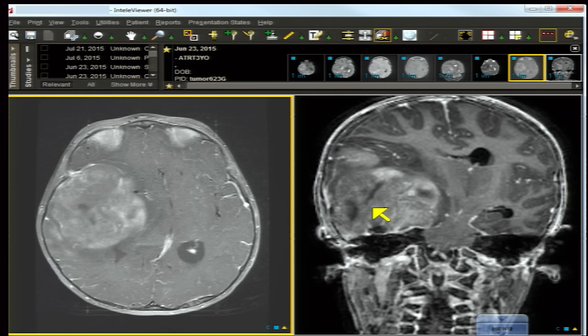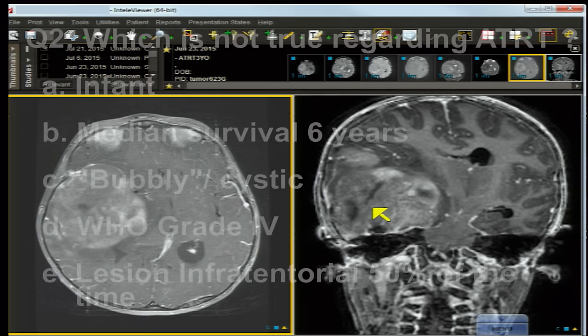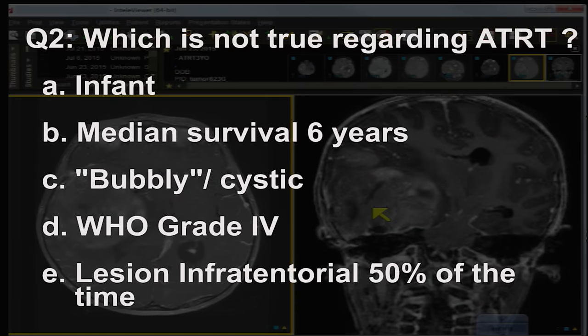Astroblastoma occurs in young individuals but not in infants, so it's not a good choice. For question two, the answer is 'median survival six years' — that is NOT true. Unfortunately, median survival is far shorter. ATRT is a WHO grade four lesion; it is aggressive, bubbly, and cystic, occurring in infants.